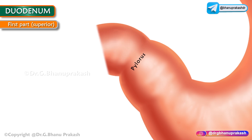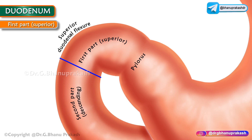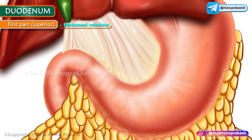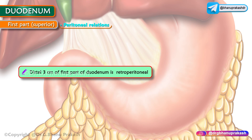The superior part begins at the pylorus, goes backwards, upwards, and to the right, and ends at the superior duodenal flexure. Regarding peritoneal relations, the proximal two centimeters are attached to the lesser omentum above and the greater omentum below. The distal three centimeters are retroperitoneal in nature, with the anterior surface covered by peritoneum.